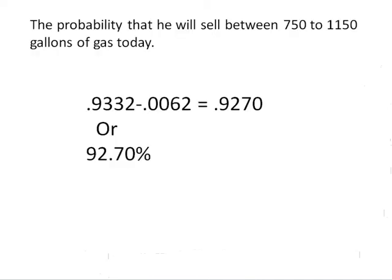The probability that he will sell between 750 and 1,150 gallons today is 0.9332 minus 0.0062, or a final answer of 92.70%.